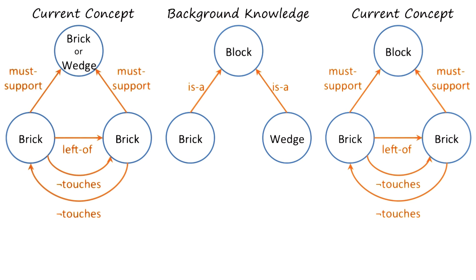If a child comes across a dog that is four-legged, furry, black, and called Buddy, and the child decides that a dog by definition is four-legged, furry, black, and called Buddy, then that is an example of undergeneralization. The conceptual characterization is correct, but not very useful, because it will not transfer to any other dog. On the other hand, if the child decides that all four-legged, furry animals are dogs, then it is an example of overgeneralization, because it could also include many cats.